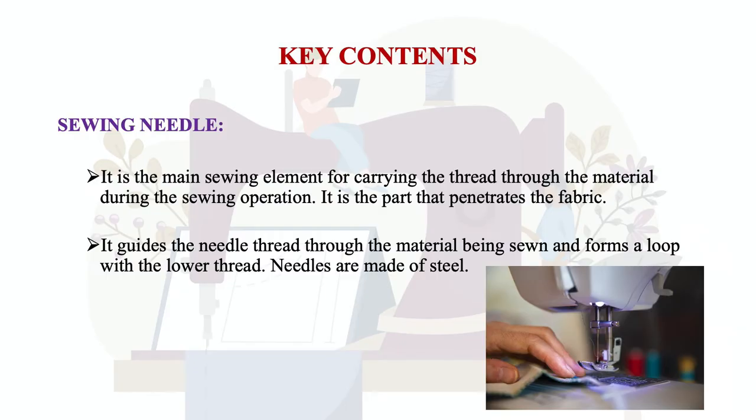We can imagine how threads are interlaced together in a constructed garment — the needle goes into the fabric and the stitching happens. It guides the needle thread through the material being sewn and forms a loop with the lower thread. Needles used for machine or hand stitching are made of steel.